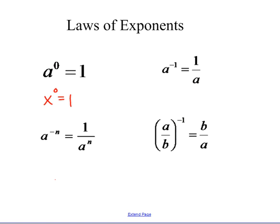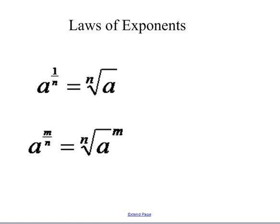And if you have something like a over b to the negative one, you can have b over a — you basically flip. So if I have one over a to the negative one, if you think about flipping, it's going to become a to the one. That's the idea with negative exponents — you think of them as flipping.